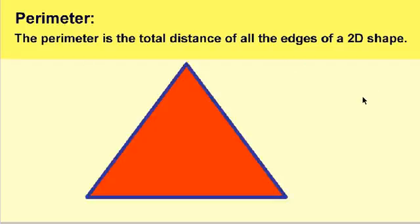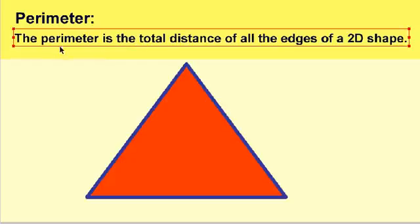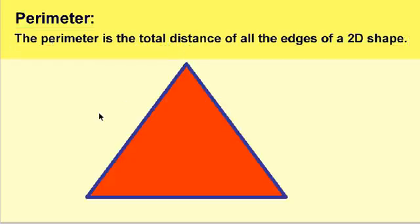Here's our triangle right here. Remember that our simple triangle is a two-dimensional shape, and as the definition says, the parameter is the total distance of all the edges. We got one edge right there, another edge right there, and another edge right there. So we got three edges of this triangle.